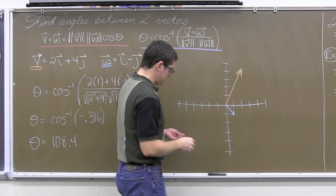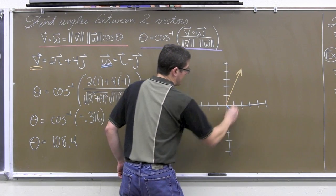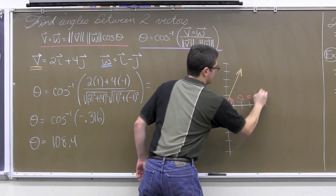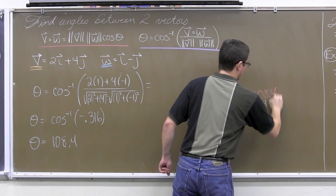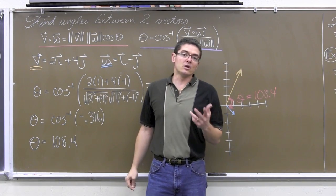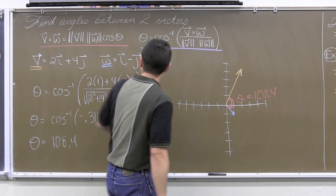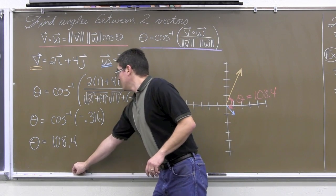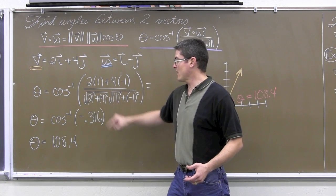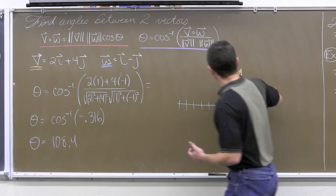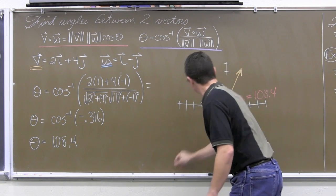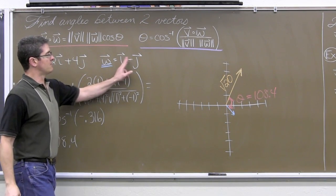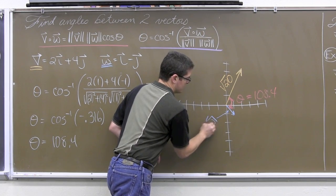Okay, so vector v says that it is 2,4. So, we are going to go to the right 2 and up 4. I am placing this on the origin only for convenience. You do not have to have vectors always have their initial point on the origin. Vector w is identified as i minus j, or so a is 1 and b is negative 1. So, that vector is right here. A rather short one. And we are finding the angle between those two vectors.